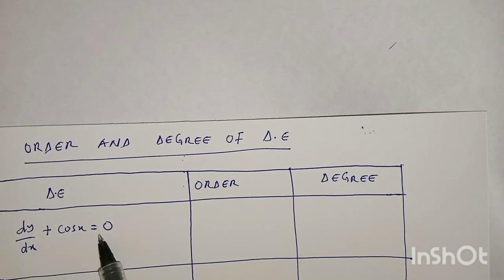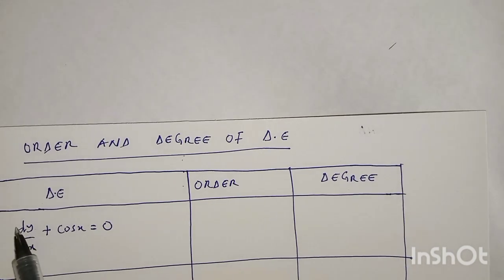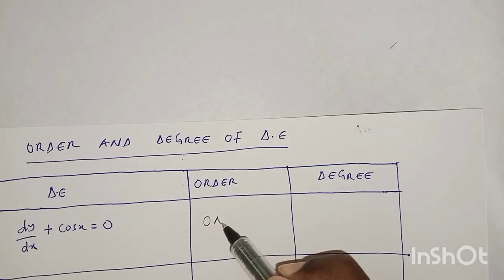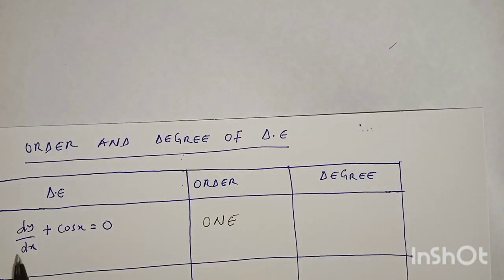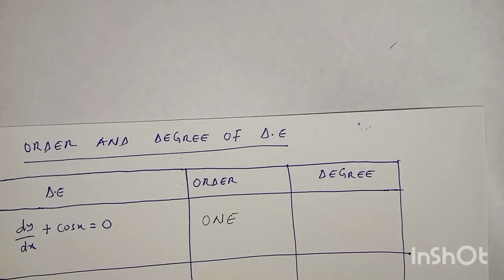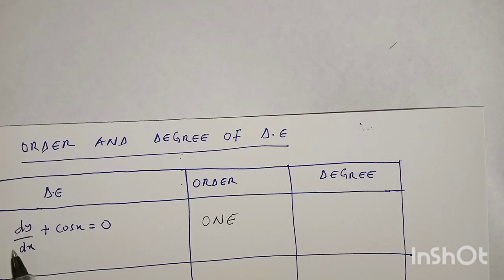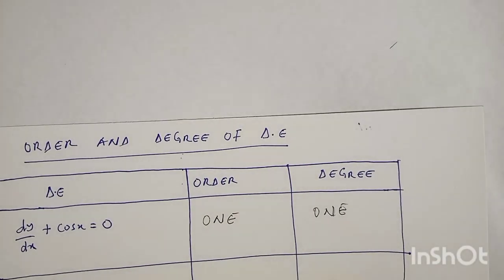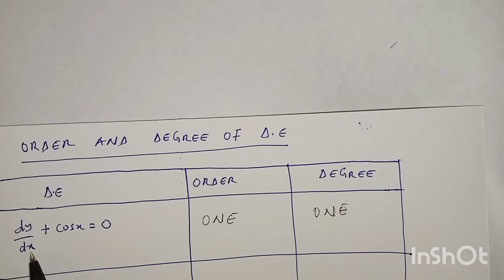In this first example, dy/dx is the only derivative we have and also it is the highest, so the order is one because this is a first derivative. The power here has no explicit power, so the power is one. Therefore this differential equation is of order one and also degree one.